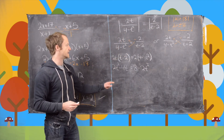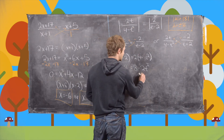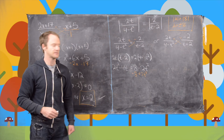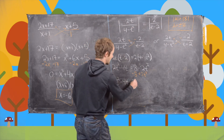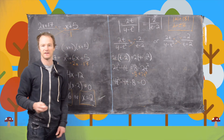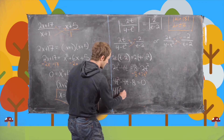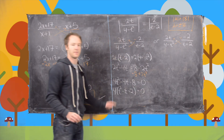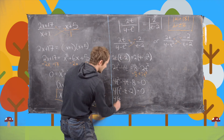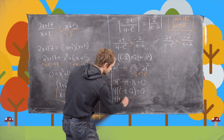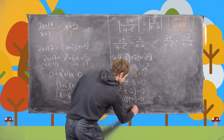Next, we move everything to one side by adding 2t² and subtracting 8 from both sides, giving us 4t² − 4t − 8 = 0. We can factor out a 4: 4(t² − t − 2) = 0. We want two numbers that multiply to −2 and add to −1, so we get 4(t − 2)(t + 1) = 0, meaning t = 2 or t = −1.